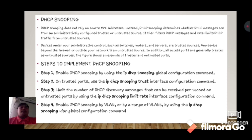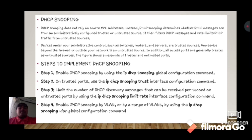Steps to implement DHCP snooping: Step 1 — enable DHCP snooping using the ip dhcp snooping global configuration command. Step 2 — on untrusted ports, use the ip dhcp snooping trust interface configuration command. Step 3 — limit the number of DHCP discovery messages per second on untrusted ports using the ip dhcp snooping limit rate interface configuration command. Step 4 — enable DHCP snooping by VLAN or range of VLANs using the ip dhcp snooping vlan global configuration command.